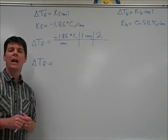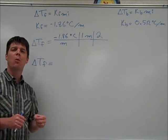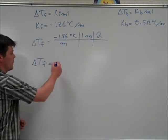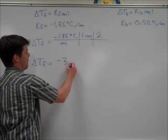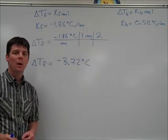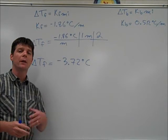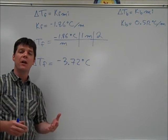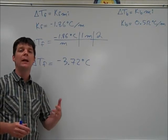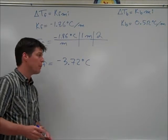We calculate a change in freezing temperature of negative 3.72 degrees Celsius. Because the normal freezing temperature for water is 0 degrees Celsius, this will also be the depressed freezing temperature.